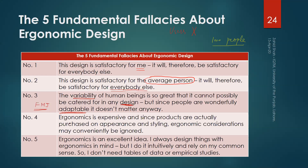The fourth fallacy is that ergonomics is expensive, and since products are purchased based on appearance and styling, ergonomic considerations may conveniently be ignored. This assumes people buy products based on how good they look, their shape, or their apparent style — so ergonomic aspects can be ignored in favor of appearance, aesthetics, and styling. Ergonomics is seen as just a fancy word that is not actually required during the design process.